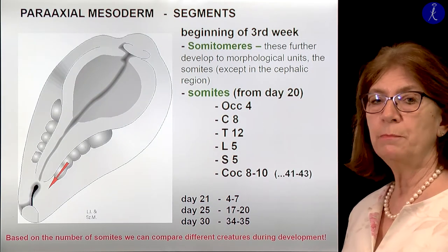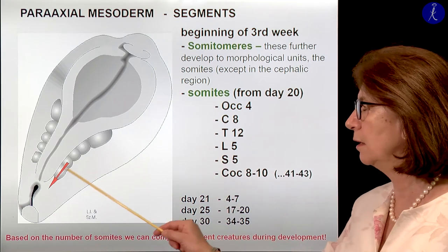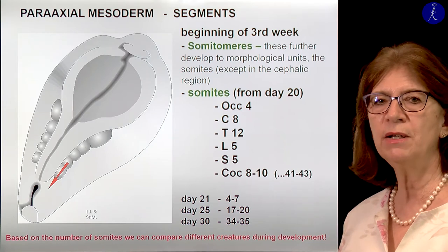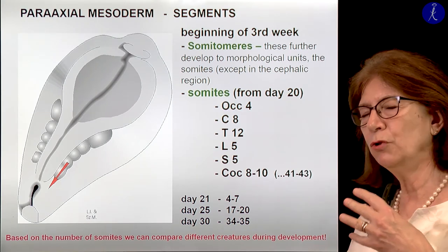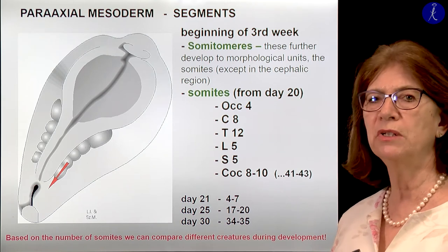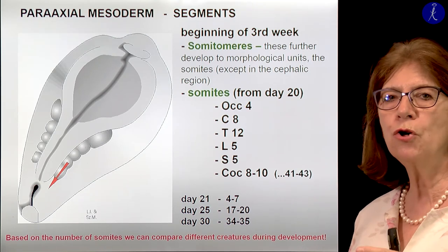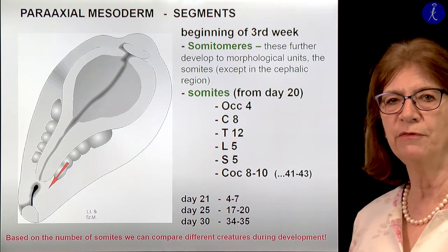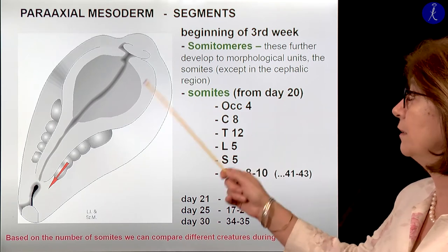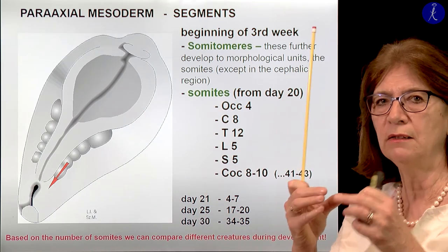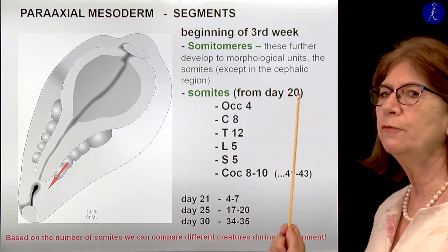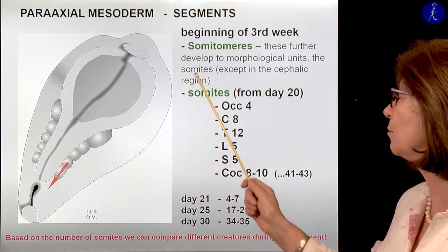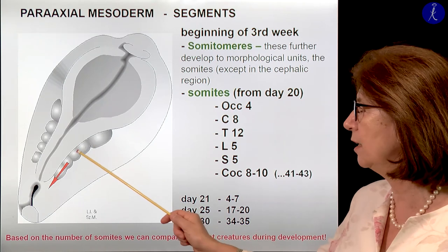What happens to this paraxial mesoderm? All along the notochord it begins to form segments. These segments first are not morphological segments, so you do not have these tissue balls. One could show the borders of the segments due to factors expressed specifically in these segments. When it's not yet forming these little tissue balls, we call them somitomeres. From the occipital region downward they will develop into somites, and they will form these special tissue balls.